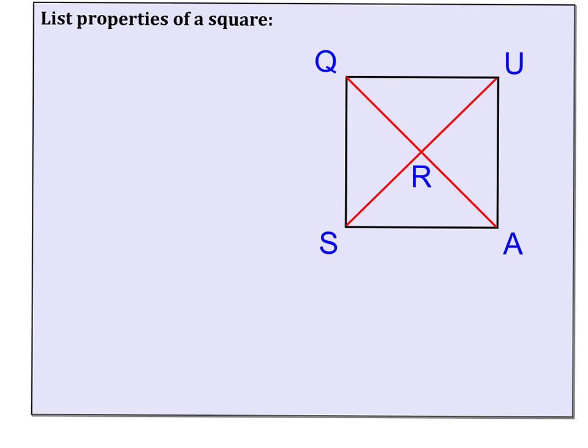The properties of a square are all of the same properties as a parallelogram, a rectangle, and a rhombus. So if we list out all of those properties, they're properties that you should already know.